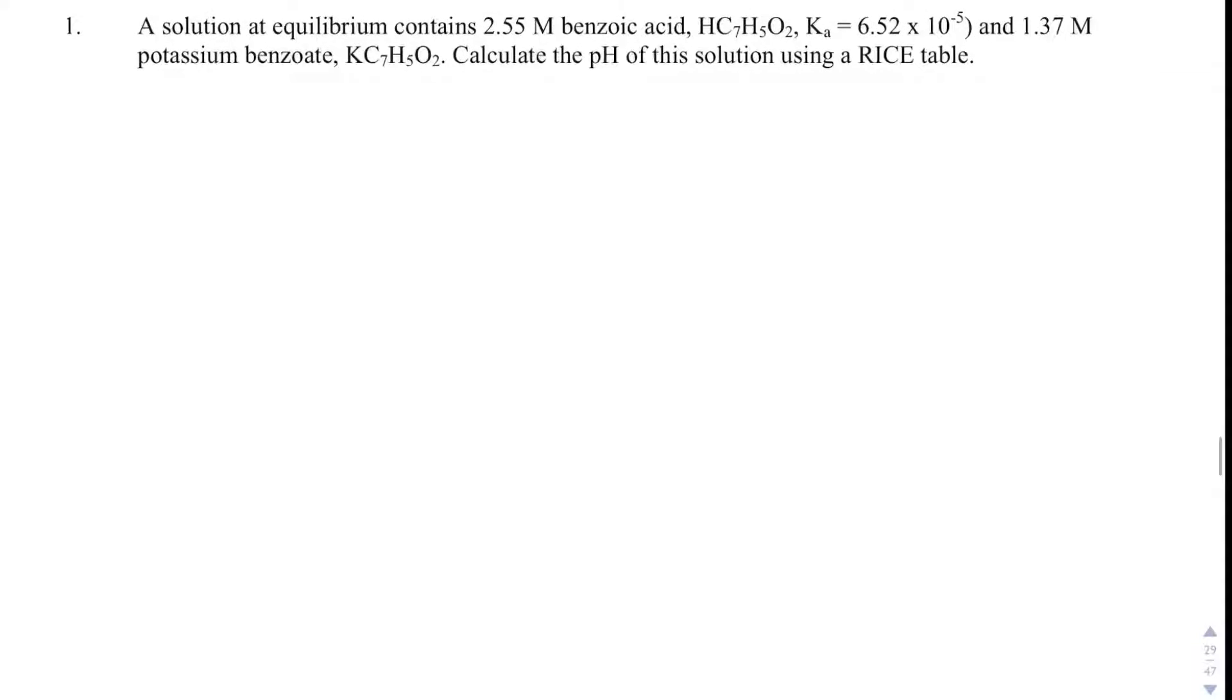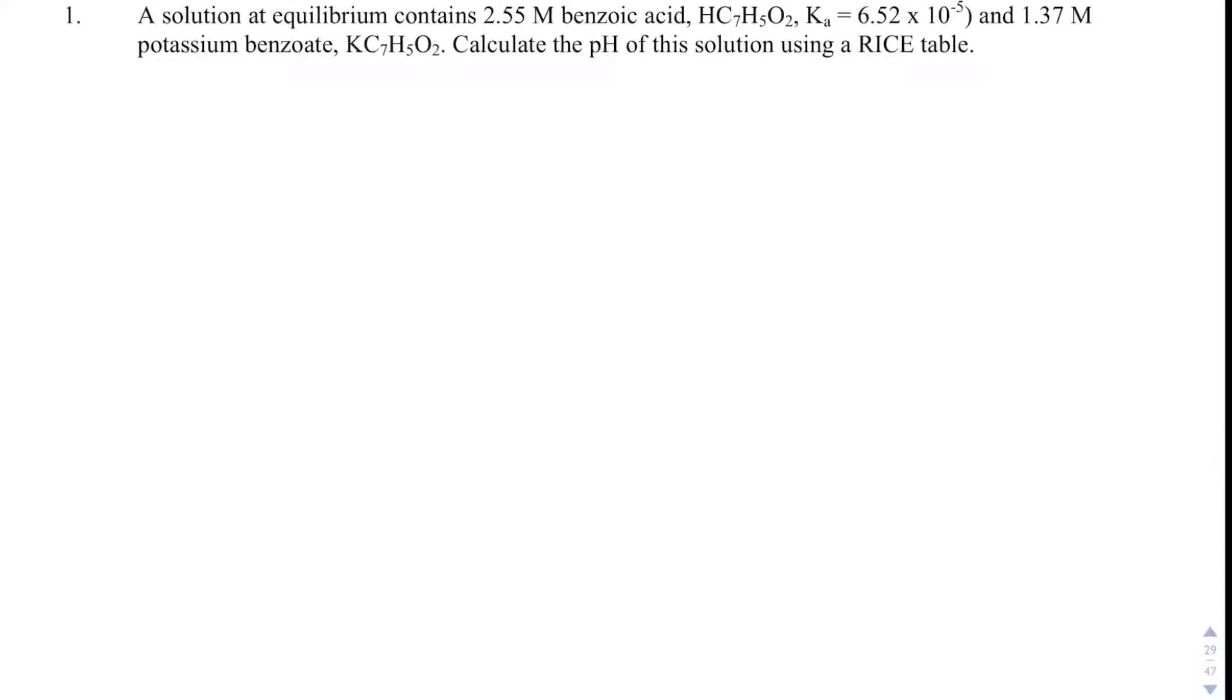Let's look at number one here. We have a solution of benzoic acid. It's got a Ka of 6.52 times 10 to the minus 5, and we have 1.37 molar potassium benzoate, and that is going to be the conjugate base. We need to calculate the solution of this using a RICE table. So what I'm going to do is I'm going to say HC7H5O2, that'll be aqueous, reacts with HOH, and that'll give us benzoate, or potassium benzoate, if we have the potassium in this reaction. We just care about the conjugate base, plus hydronium, and then we can make a RICE table.